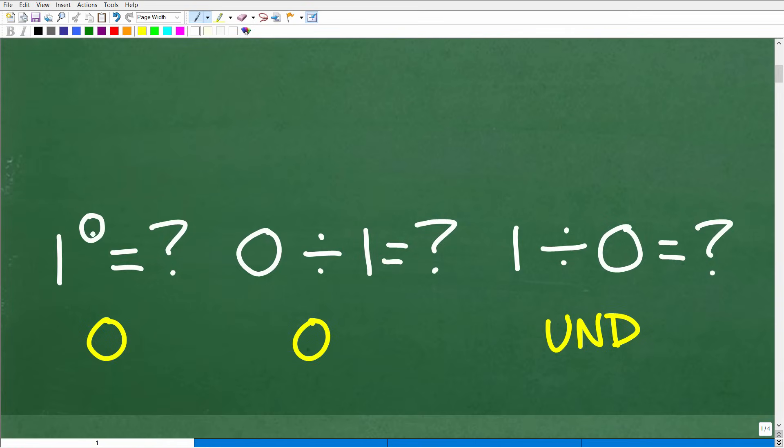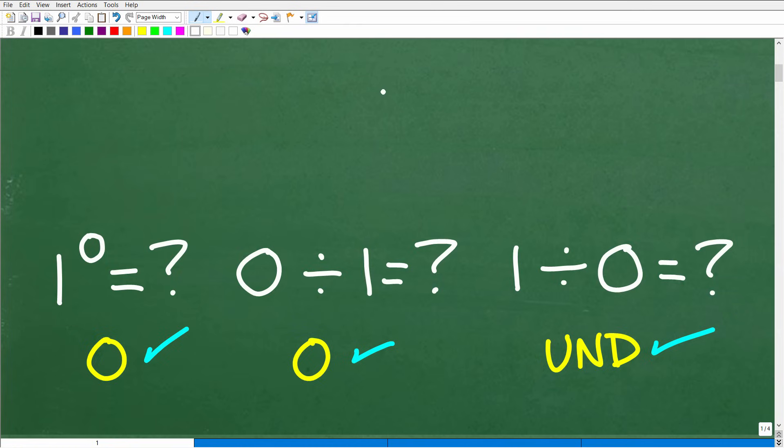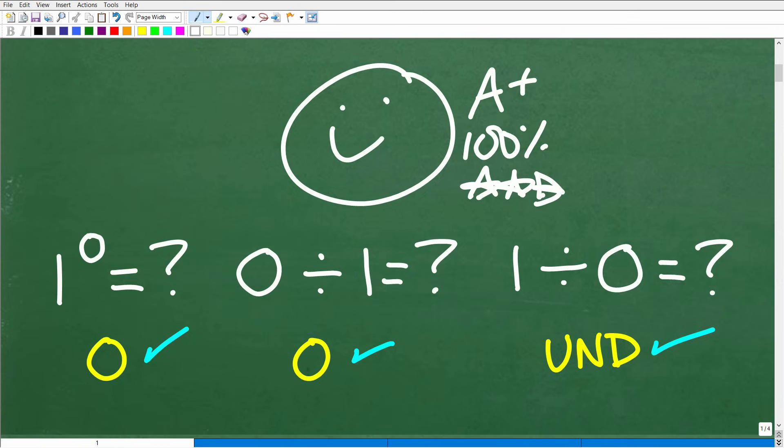Okay, so one to the zero power is one. I'm going to give you a full explanation on each of these right here, but we're just going to take a look at the answers. Zero divided by one is zero. And one divided by zero is what we call undefined. You cannot do that in mathematics. All right, so how did you do? Well, if you got all three of these right, that is super impressive. Matter of fact, I'm going to give you a nice little happy face and A plus, a 100% and multiple stars. So you can brag to your friends and family that indeed you are a certified professional expert in zero. I'm pretty sure your family will be super impressed by that information.